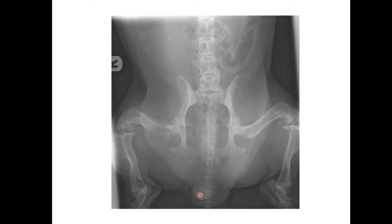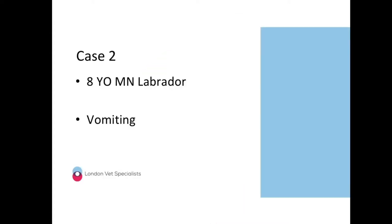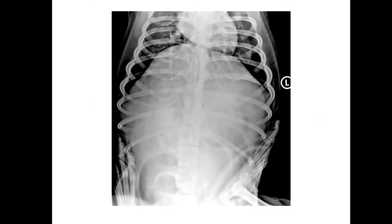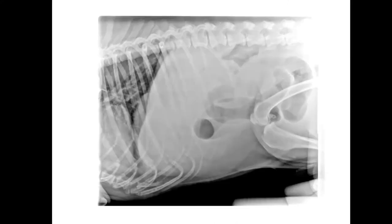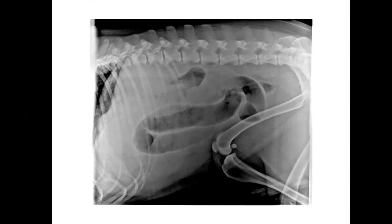Any other questions about case number one? Okay, let's move on. Case number two is an eight-year-old male neutered Labrador that's presented to you vomiting. Who fancies case number two? We have three radiographs here to have a look at — what's probably a right lateral, a DV, and then another right lateral. None of them are particularly good radiographs; however, there's lots going on here. Anybody fancy case number two? Don't be shy — we are all friends here. I'm happy to give it a go. Absolutely, go for it.